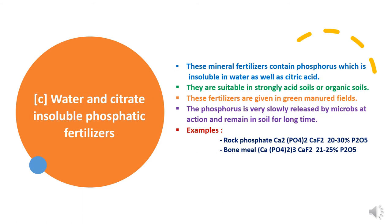The third category is water and citrate insoluble Phosphatic fertilizers. These fertilizers are suitable for strong acid soils and organic soils, and have slowly released properties due to microbial actions. They are available in the soil for a longer period, slowly becoming available to the plants. Examples include Rock Phosphate, which contains 20–30% Phosphorus, and bone meal, which contains 21–25% Phosphorus.